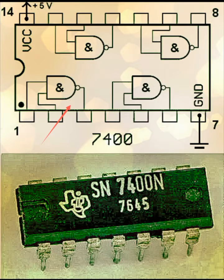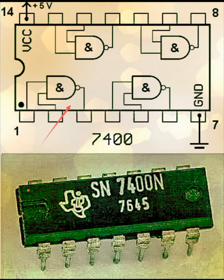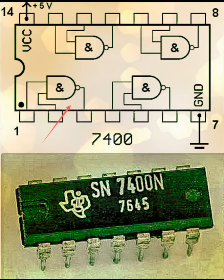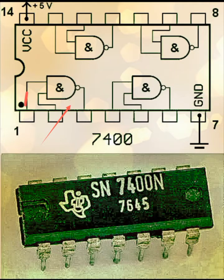So totally 14 pins. When you buy this IC from the market, on any one corner you will find a black dot. That black dot indicates the start of the pins, that is pin number one. So here you will see pin number one, which is one of the inputs to one of the gates. Then this is pin number two, this is pin number three.